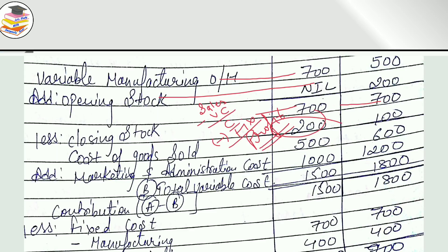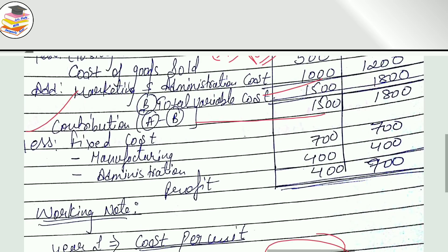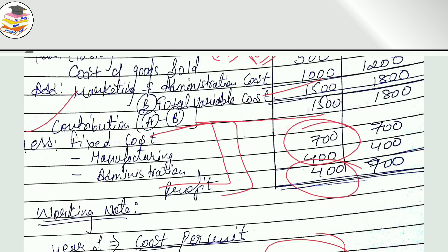The cost of goods sold is calculated. Then add variable marketing and administration costs to get total variable cost. Fixed cost has no role in stock valuation here. Sales minus total variable cost gives contribution. Contribution minus total fixed cost gives profit. Try to do this alongside the video — pause if you need to.